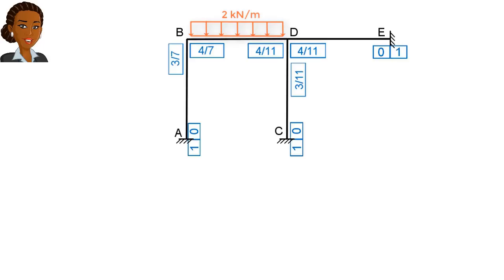To set up the moment distribution table, we imagine a flattened frame like this. However, as you can see, the frame cannot be flattened completely, which means we cannot set up a table with contiguous columns. Since the table needs to have a column for each member end, we need to create a separate pair of columns for joint C, like this.